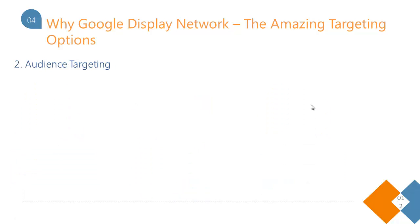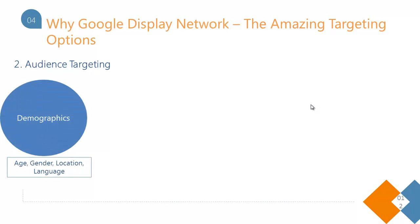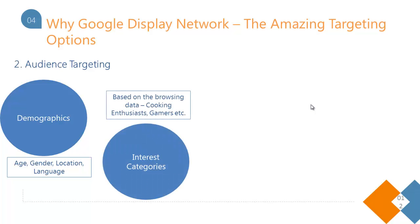Let's come to the second major category, which is audience targeting. The first kind under audience targeting is the very basic demographics targeting, where you can target people based on age, gender, location, and language.